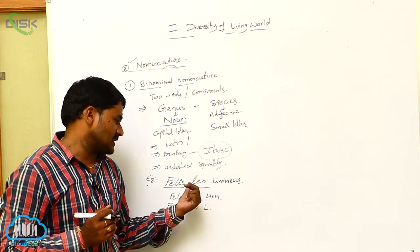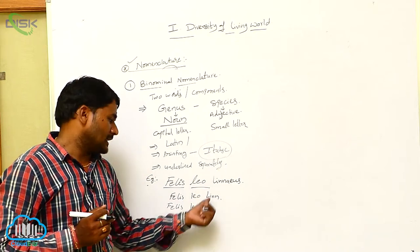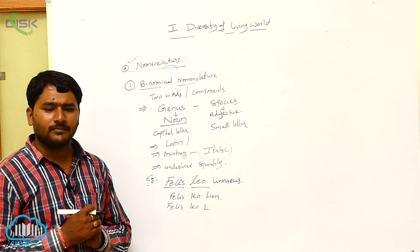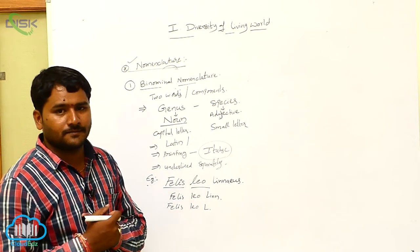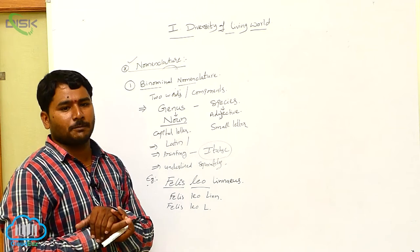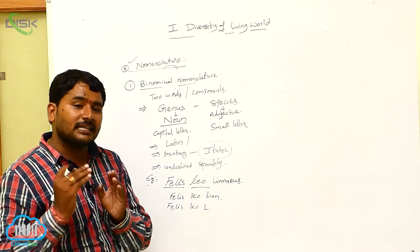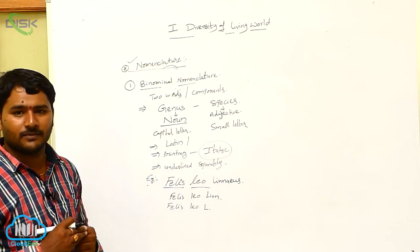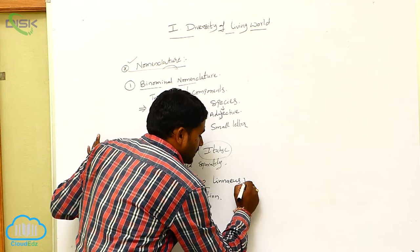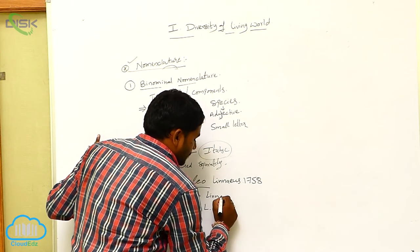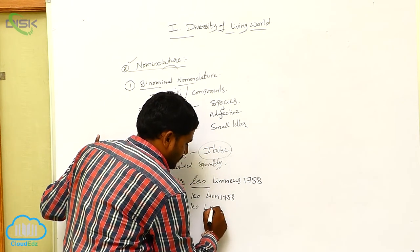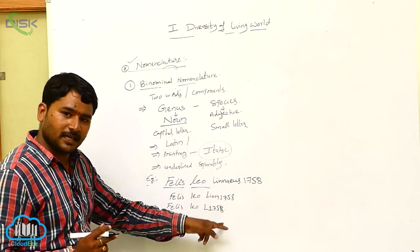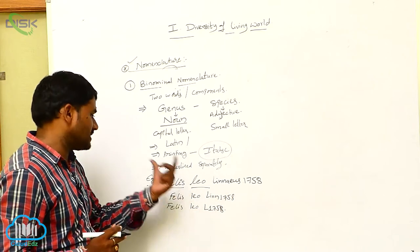You can write the full name of the scientist after the scientific name, or you can write the abbreviated short form of the scientist. If you know the year of discovery — in which year that scientific name was proposed — you can write the year of discovery after the name of the scientist. For example, this was proposed in 1758. So 1758 is the year, and Linnaeus is the name of the taxonomist.